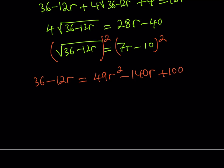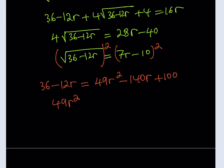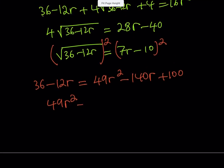We're almost done. Let's go ahead and put everything on the same side. 49r squared. So I'm going to be adding 12r. So negative 140 plus 12 is negative 128. Nice. Negative 128r. So this is taken care of, this is taken care of, this is taken care of. Now what I have is 36 subtracted from 100. That's going to be 64. And the whole thing is going to equal 0.